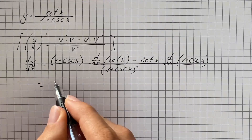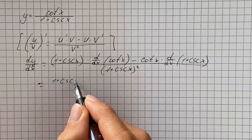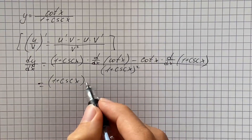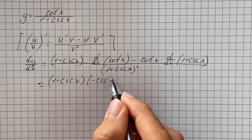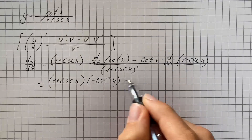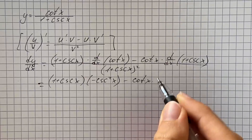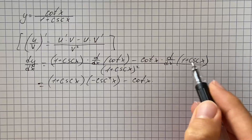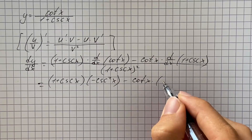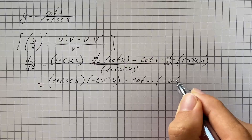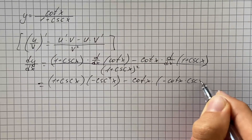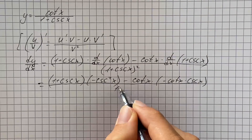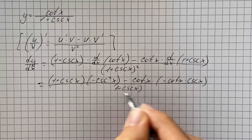So that's going to be one plus cosecant of x. The derivative of cotangent is negative cosecant squared of x, minus cotangent of x — and the derivative of the constant is zero, and the derivative of cosecant is negative cotangent of x times cosecant of x — all over one plus cosecant of x squared.